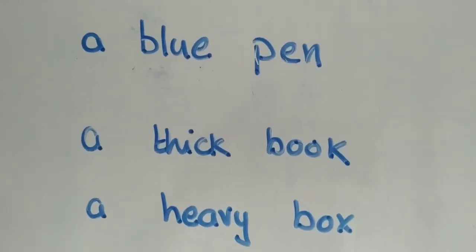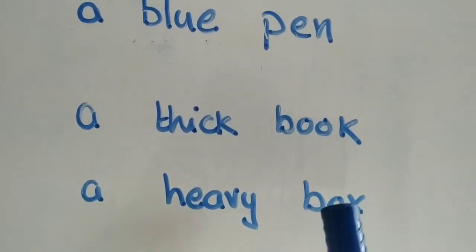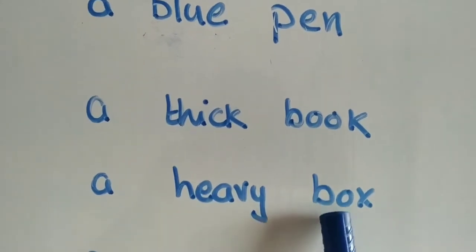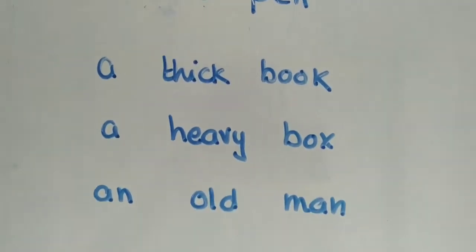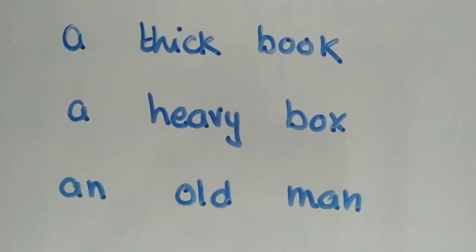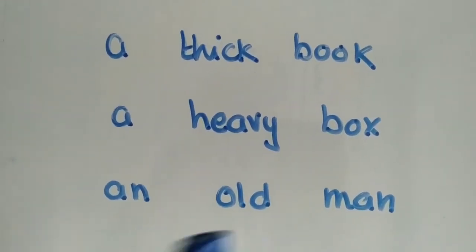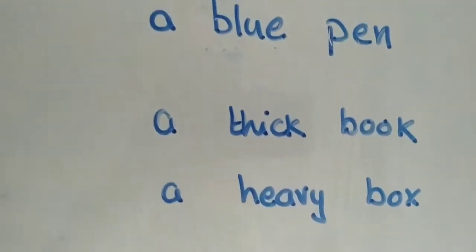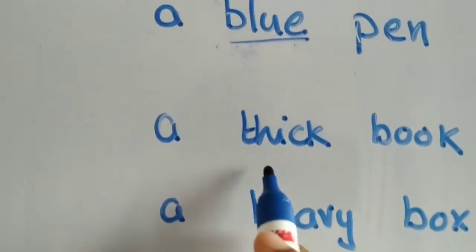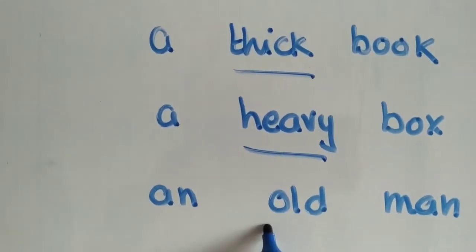A heavy box. Box is a noun, a naming word, a thing. Heavy box. An old man — man is a naming word, a person. How is the man? He is old. So, the words blue, thick, heavy, old — all these work about the naming word, more about the naming word.